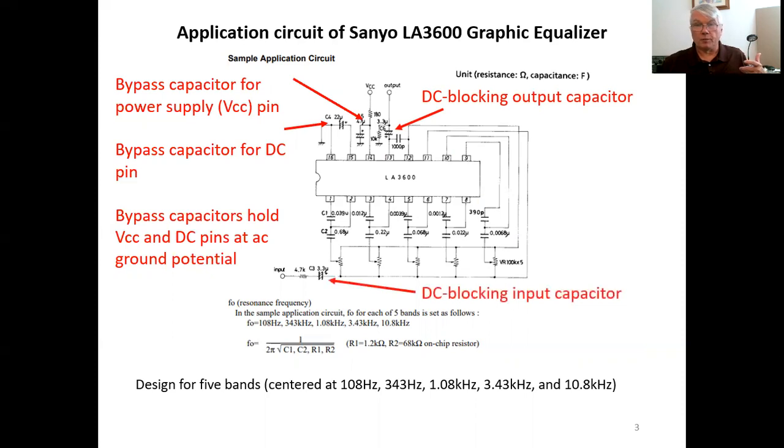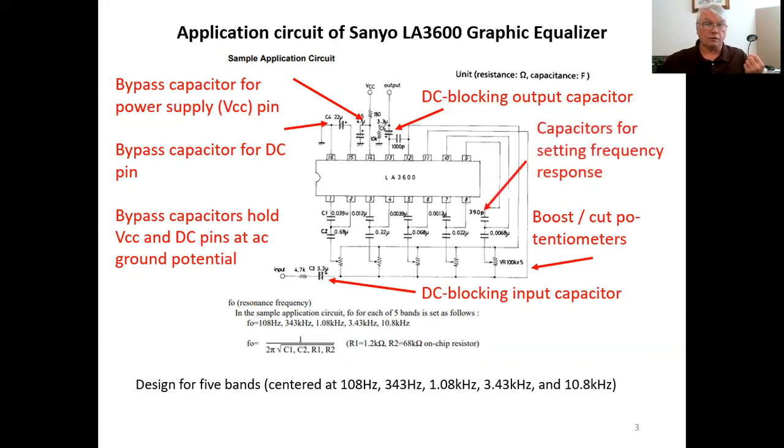We also have a DC blocking output capacitor, the DC blocking input capacitor. For purposes of our understanding the circuit, they're not terribly important. And we have here the boost cut potentiometers. And these capacitors you see here are used for setting the frequency response of each band. We'll see how that works. One other thing to point out is this input resistor, 4.7k, reason for that specific value, which will become apparent here shortly.